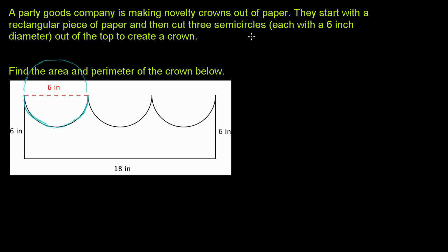It is half of a full circle that has a diameter of 6. If we wanted to know the circumference of the entire circle — and this really comes straight out of the definition of pi — it's pi times the diameter, or 2 pi times the radius. They give us the diameter right over here: the diameter is 6 inches. So the circumference of the entire circle is going to be equal to 6 pi.